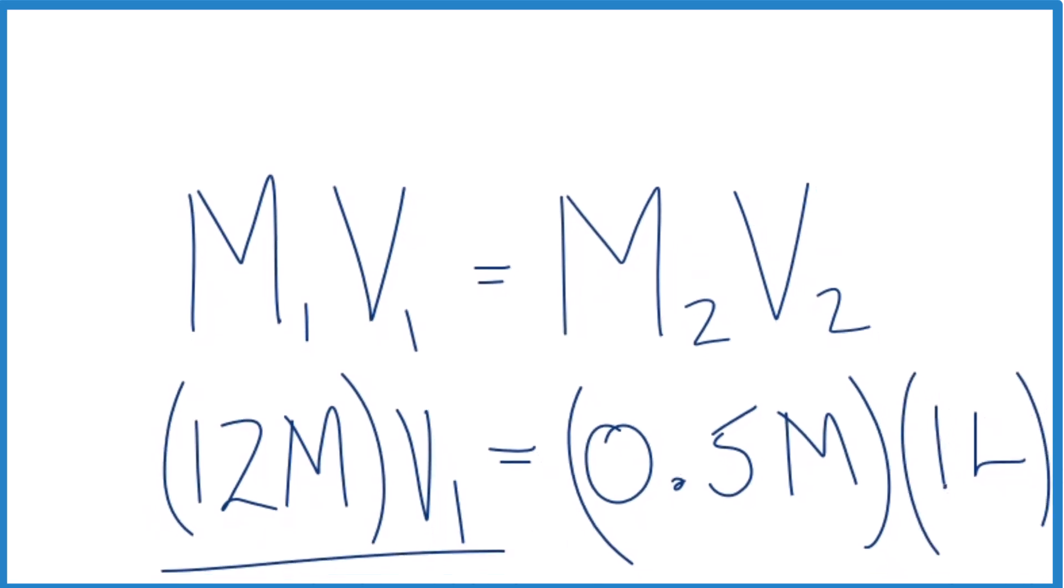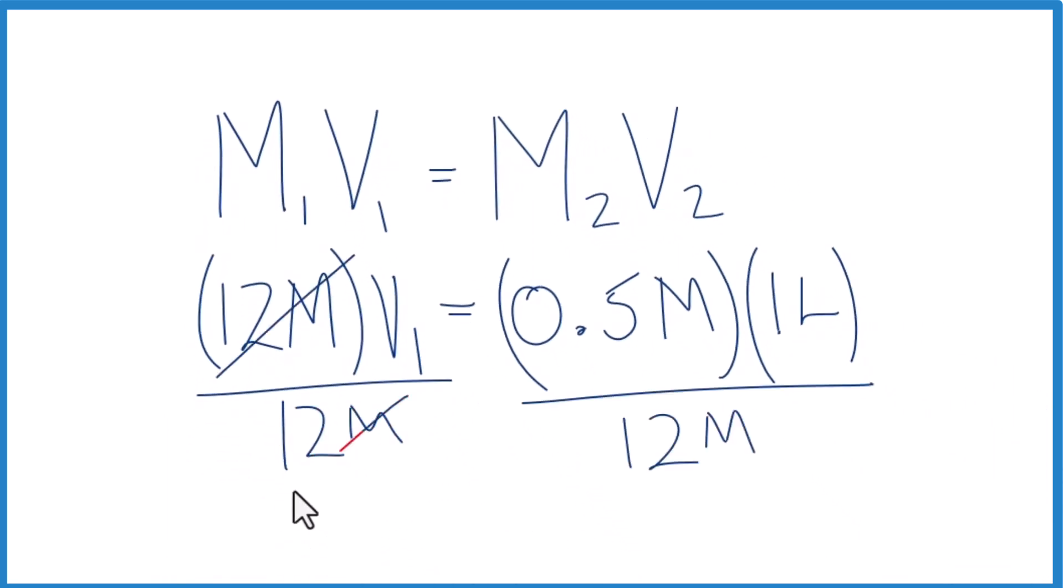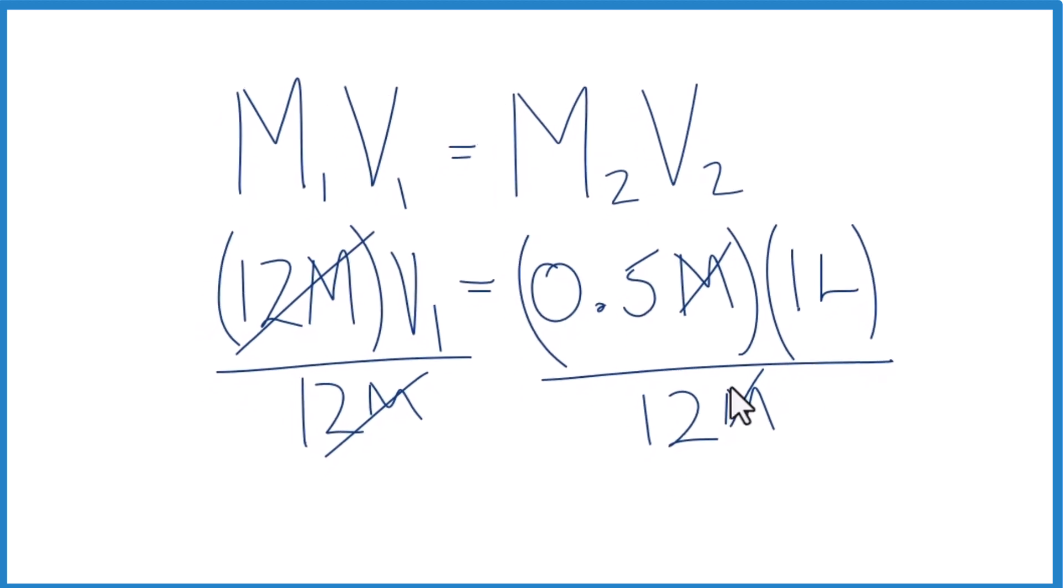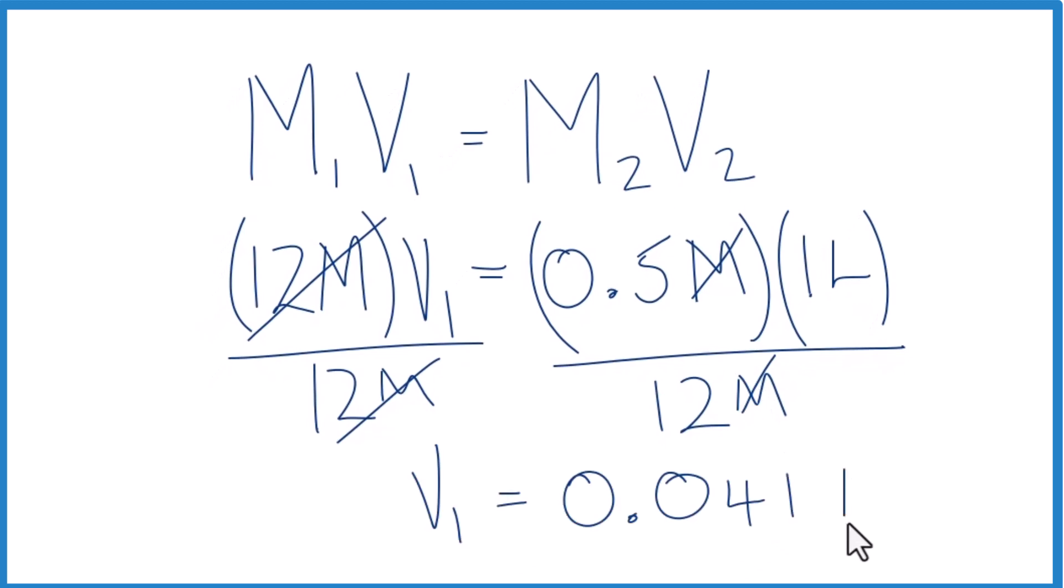We want to get our molarity of 0.5 molar, and we want to make one liter of that. So now we just divide both sides by 12 molar. We have molar on the top and bottom, that cancels out. We're going to be left with our units of liters. So it's going to be 0.5 divided by 12 liters. We get 0.041 liters. If you wanted milliliters, just multiply that by 1,000. That's what we had before when we looked at our recipe.